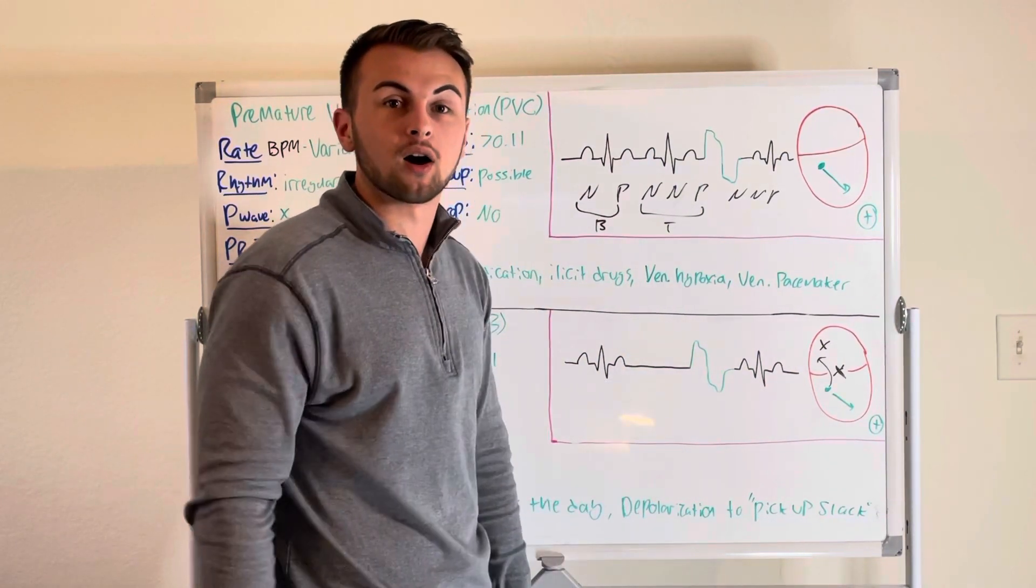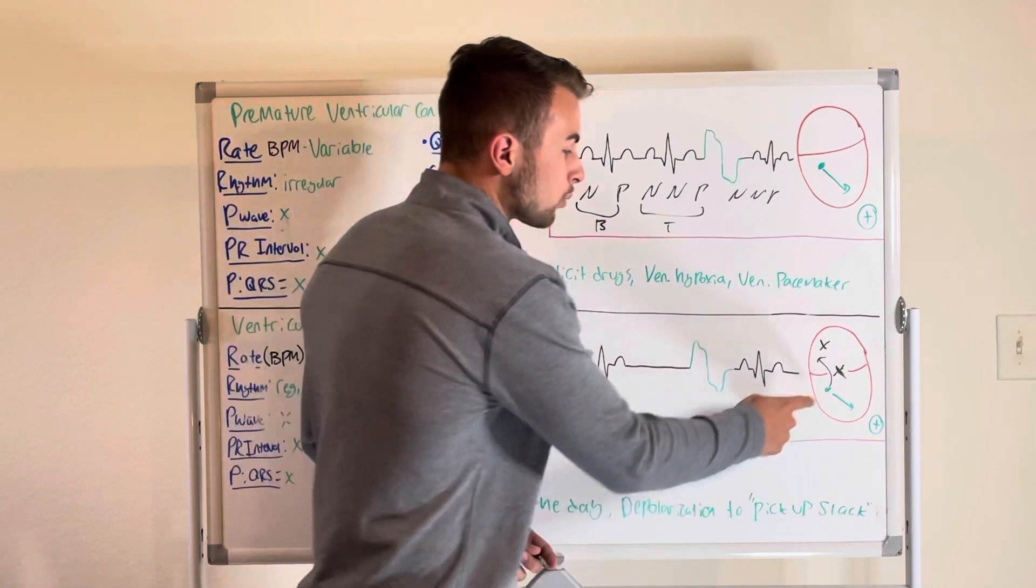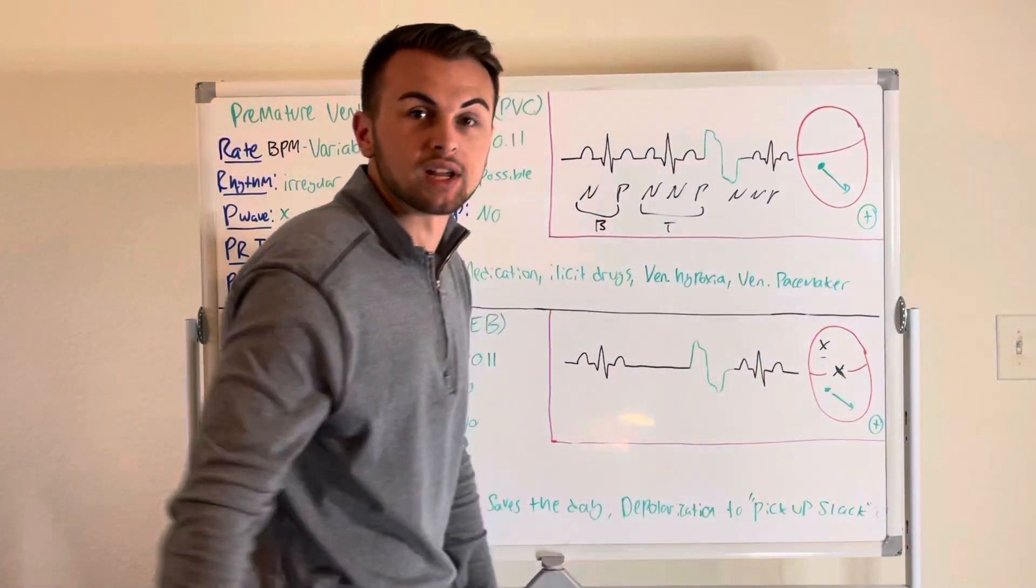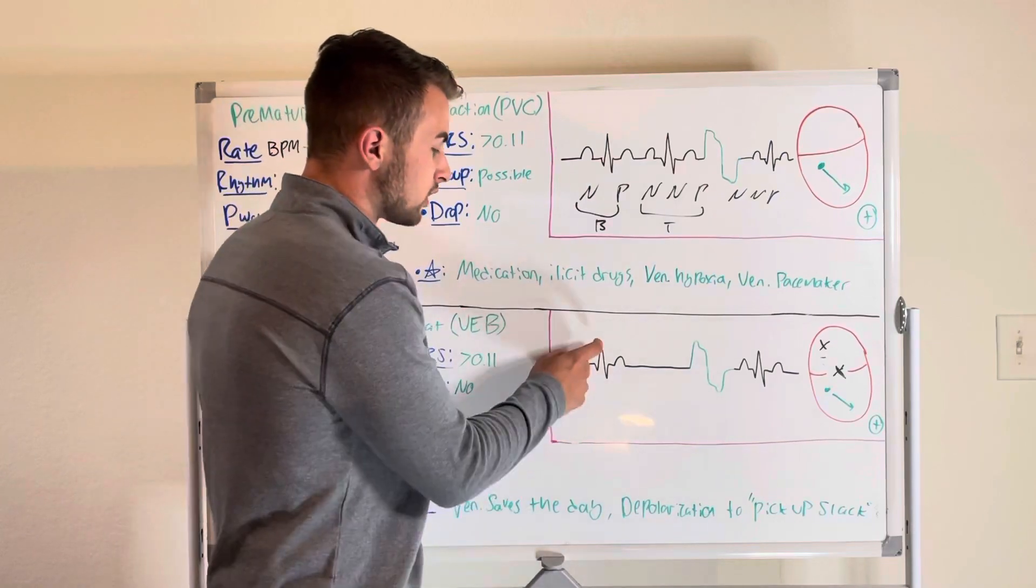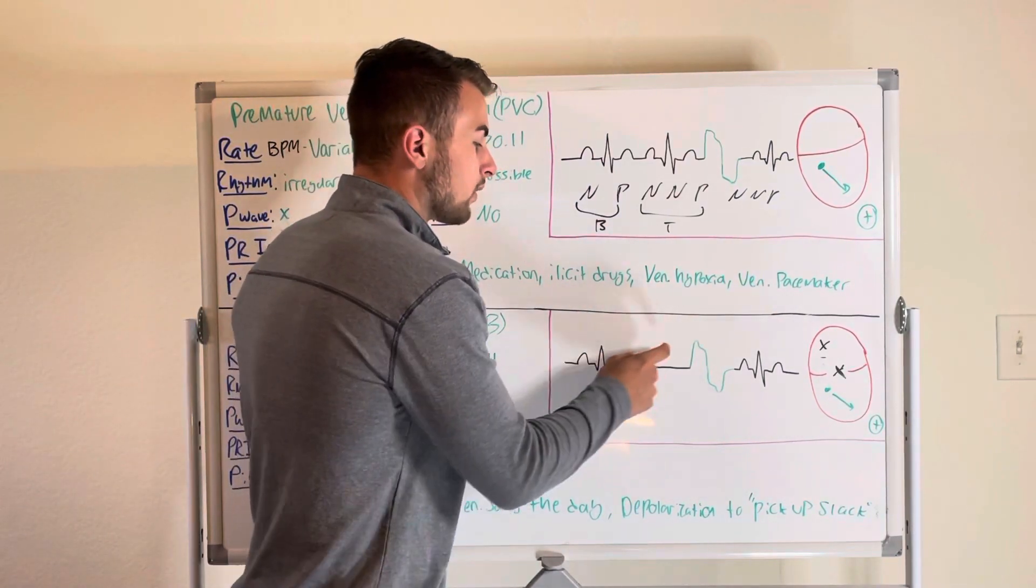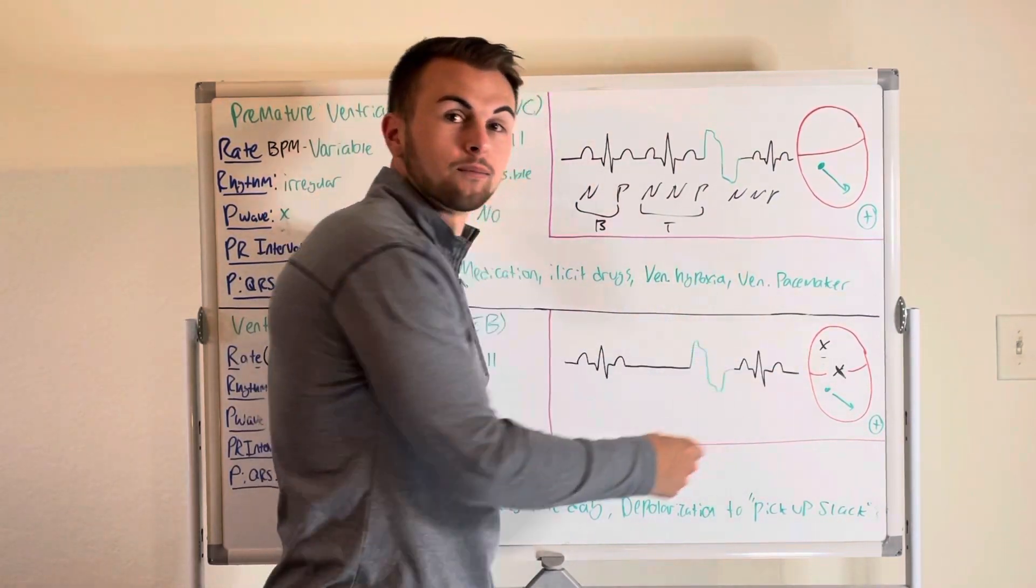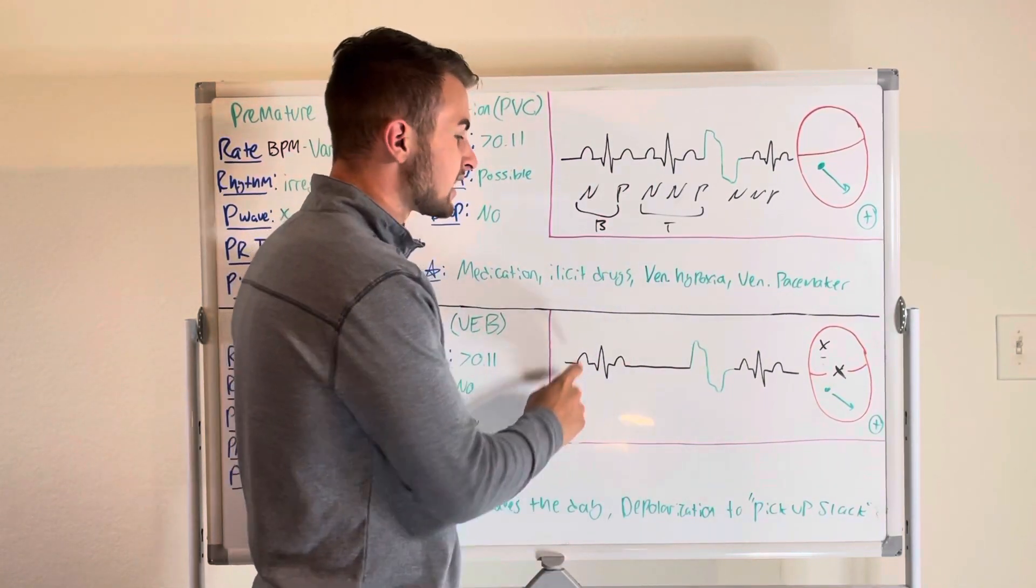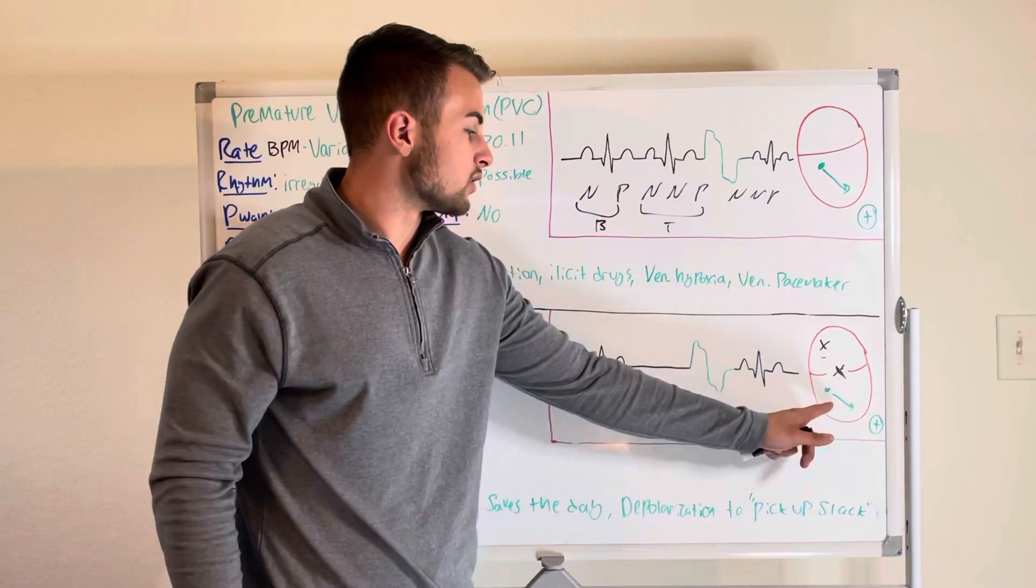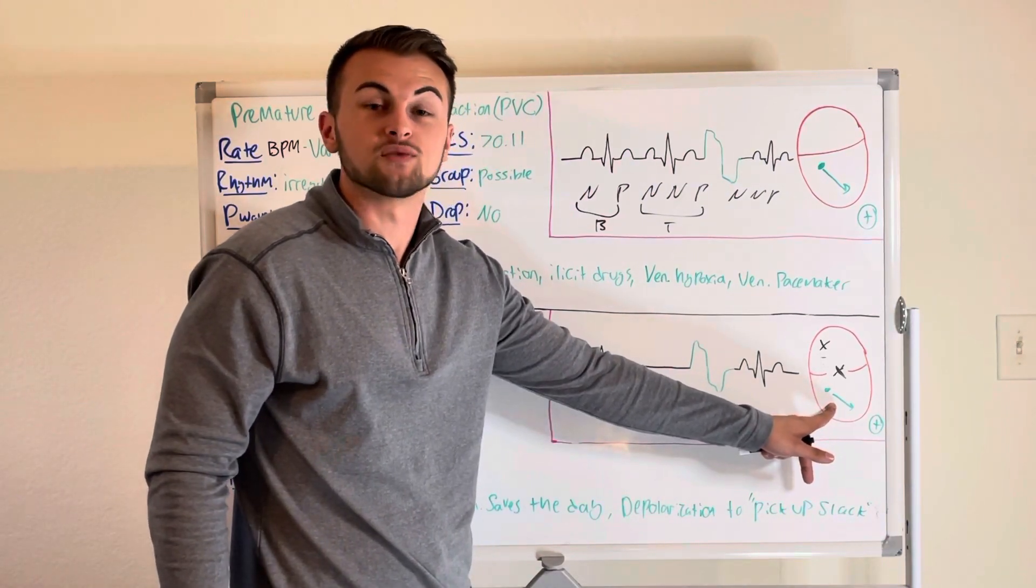So a compensatory pause means that the abnormal impulse did not reach the SA node which means that the SA node is just going to continue to fire at its normal rhythm or its normal P to P interval. This is because the SA node doesn't even know that the ventricular pacemaker has fired an impulse.